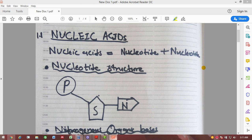Now let us quickly look at the structure of the nucleotide. The structure of the nucleotide contains the phosphate group, the sugar group, as well as the nitrogenous organic base.